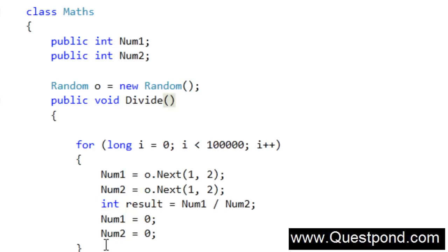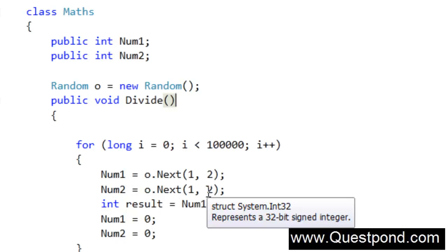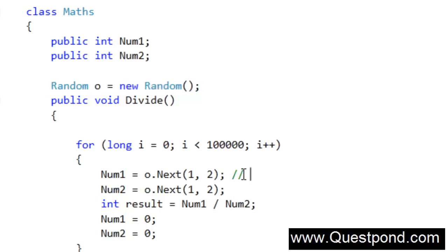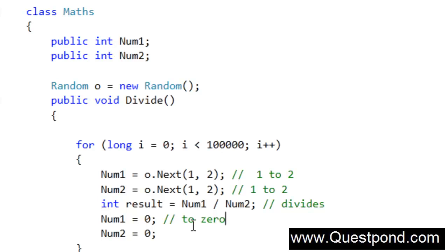It runs 100,000 times. It takes random numbers into num1 and num2 variables using the .NET random function — random numbers between 1 to 2 in num1, and again random numbers between 1 to 2 in num2. It divides them and then initializes both num1 and num2 to 0, so that the next for loop iteration can proceed properly.